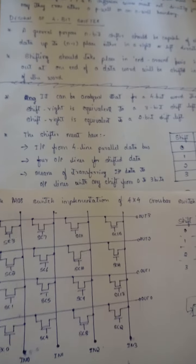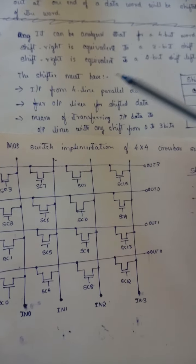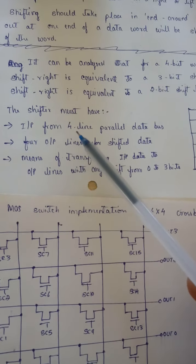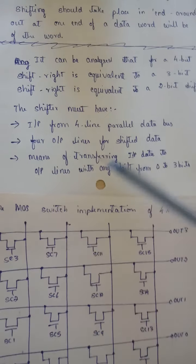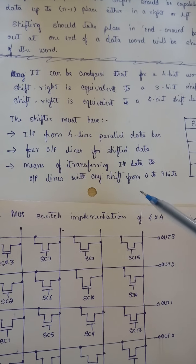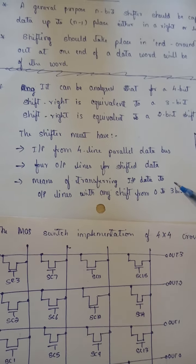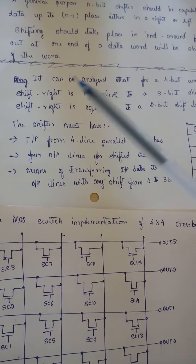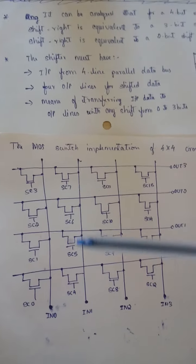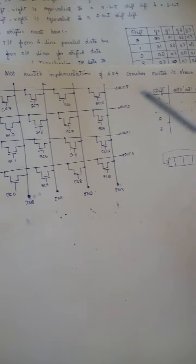If you have a register of a 4-bit shifter with bits a3, a2, a1, and a0 — after one right shift, the content of each register moves one position to the right, and the content of the last register comes back as feedback to the first register. In a left shift, the movement goes the other direction — each bit shifts left and the content of the first register wraps around to the last.